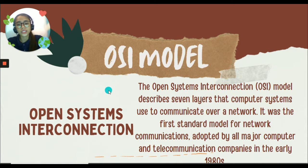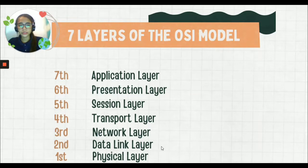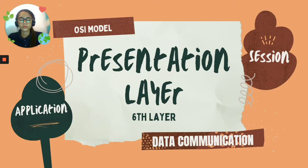The OSI model was introduced by the ISO, or the International Organization for Standardization, in 1984. Here are the seven layers of the OSI model: the application layer, presentation layer, session layer, transport layer, network layer, data link layer, and physical layer. Today, I will be discussing the presentation layer, or the 6th layer of the OSI model.